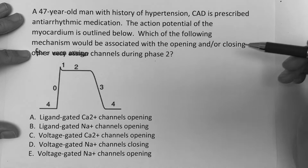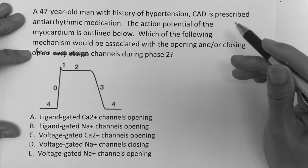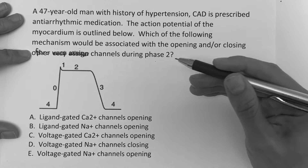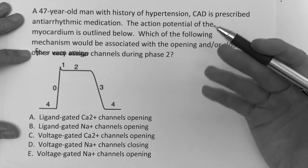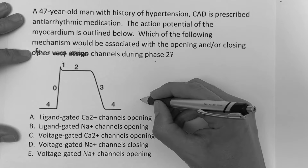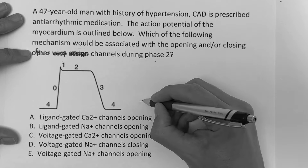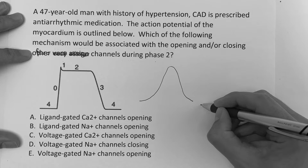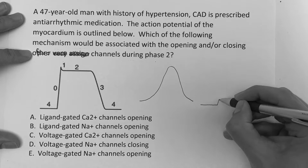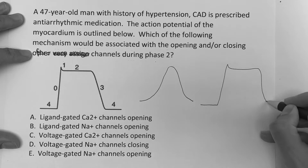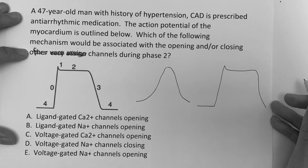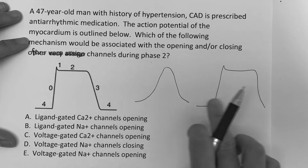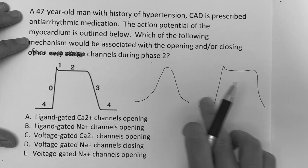This is obviously going to be a cardiac question. So we have to ask ourselves: is it the pacemaker or is it going to be the myocyte? That's because there are two different ones that you have to know for the Step exam.